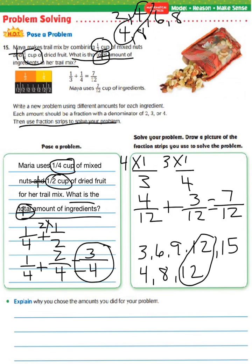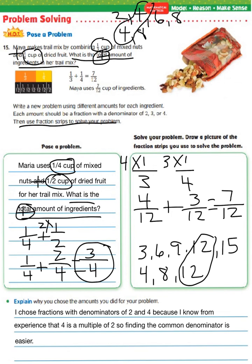For the last part — explain why you chose the amounts you did — we chose fractions with denominators of two and four because we know from experience that four is a multiple of two, so finding the common denominator is easier.